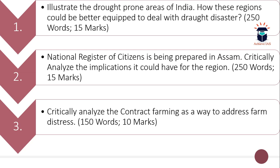The second question is: the National Register of Citizens is being prepared in Assam — critically analyze the implications it could have for the region. You have to critically analyze this exercise of preparation of the National Register of Citizens. The word limit is 250 and maximum marks are 15. The third question is: critically analyze contract farming as a way to address farm distress. Discuss contract farming and its potential to address farm distress. Word limit is 150 and maximum marks are 10.